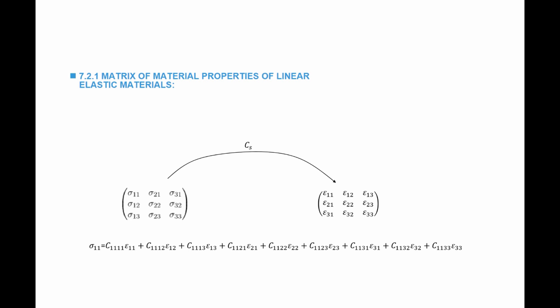To find the component of the stress sigma_11 as a function of the strain components, I will need nine coefficients: C_1111, C_1112, C_1113, and so on. The stress component sigma_11 would be equal to the first constant multiplied by epsilon_11, the second constant multiplied by epsilon_12, and so on. So I will need nine constants multiplied by the strain matrix components.